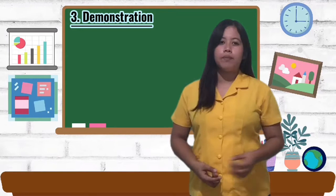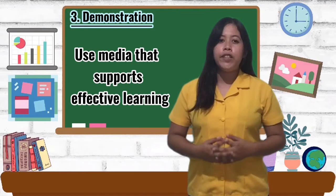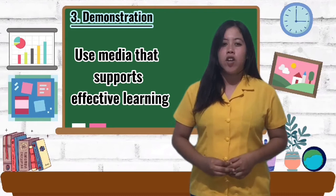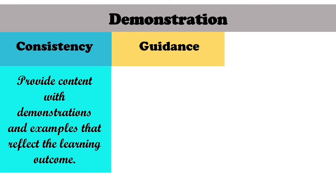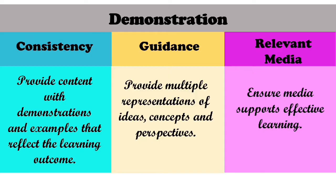Third, use media that supports effective learning. Some forms of media may compete with the learner's attention, so be careful in choosing backgrounds and audio that is relevant to the content. Engaging with learners is very important because online learners can absorb information effectively when they see prime examples. The three phases of demonstration are: first, consistency — provide content with demonstrations and examples that reflect the learning outcome; second, guidance — provide multiple representations of ideas, concepts, and perspectives; and third, relevant media — ensure media supports effective learning.